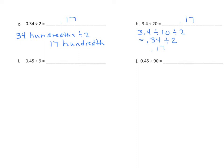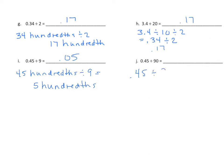Going on to I: we have 45 hundredths divided by 9 equals 5 hundredths. Write that in standard form — 5 hundredths. Now we'll take problem J and decompose it in a way that goes back to our original fact of 45 hundredths divided by 9. So we have 45 hundredths divided by 9, divided by 10. If we look at the portion in the parentheses, it's identical to our expression for I. So we have 5 hundredths, and now we divide that by 10 and get 5 thousandths.